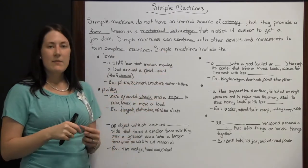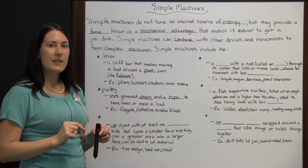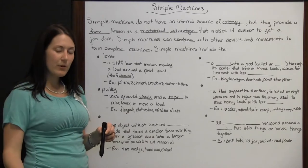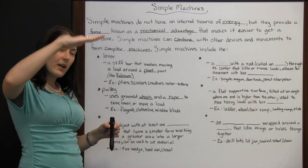Window blinds, same thing. You pull on them, they raise up because there's a pulley system up in the top part of your blind. When you pull down, it's going to rotate up in the pulley system and pull the blinds up.